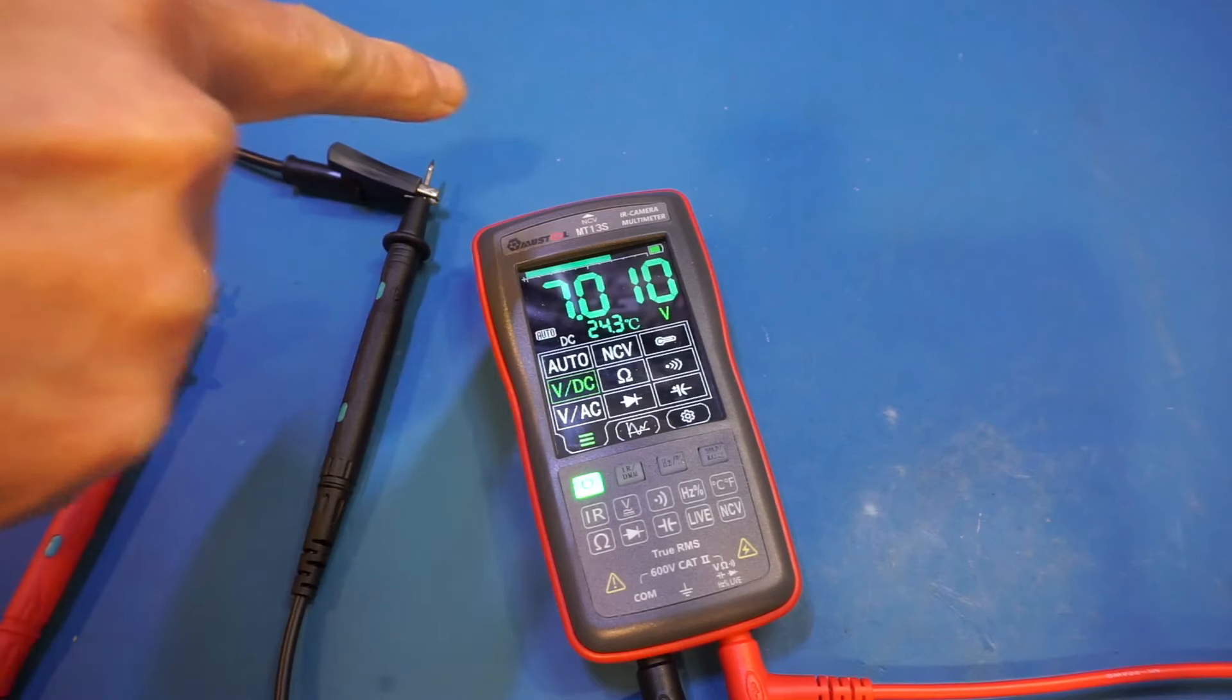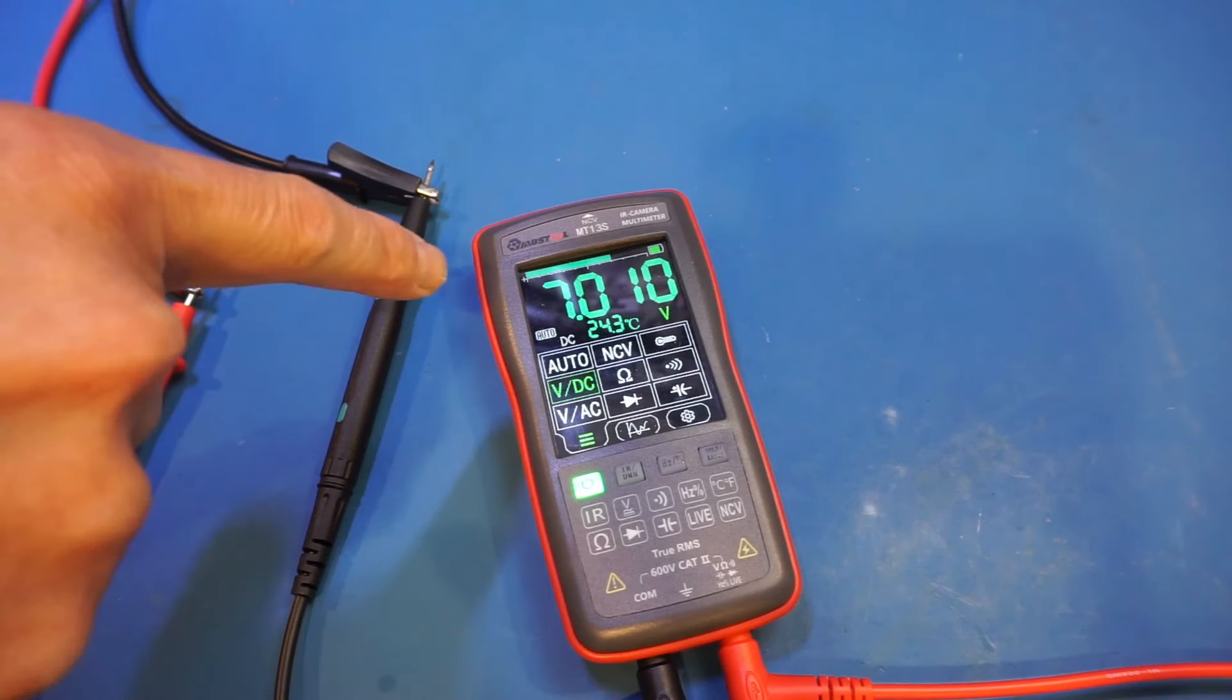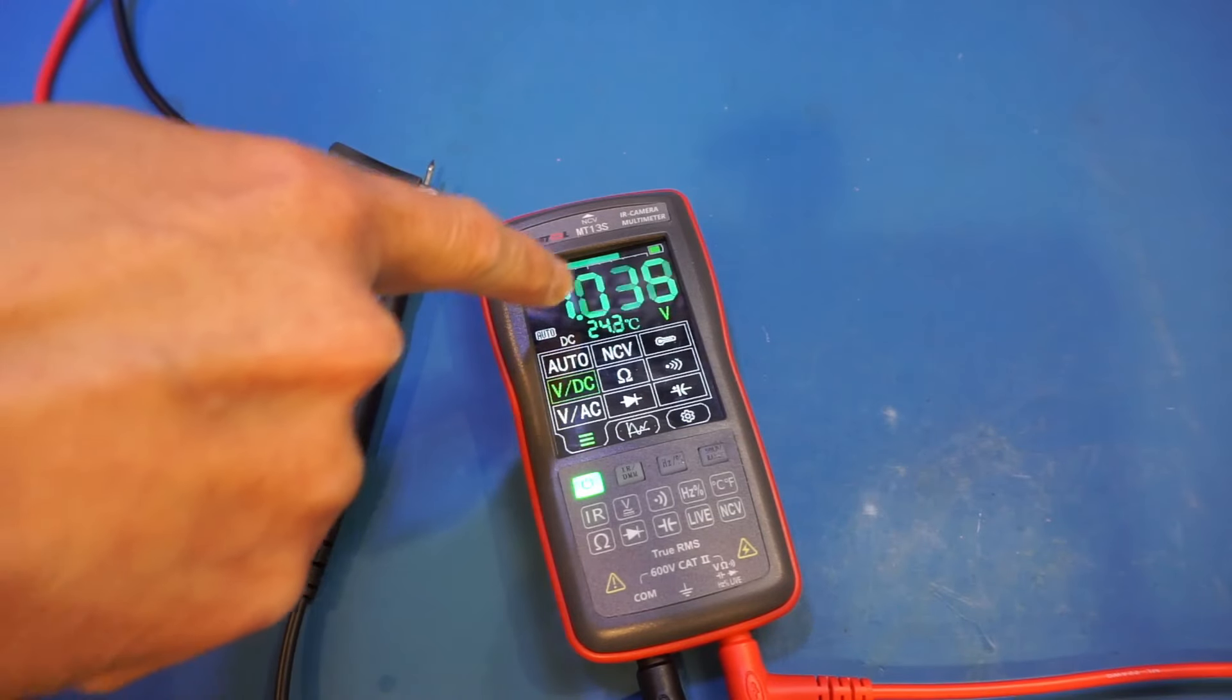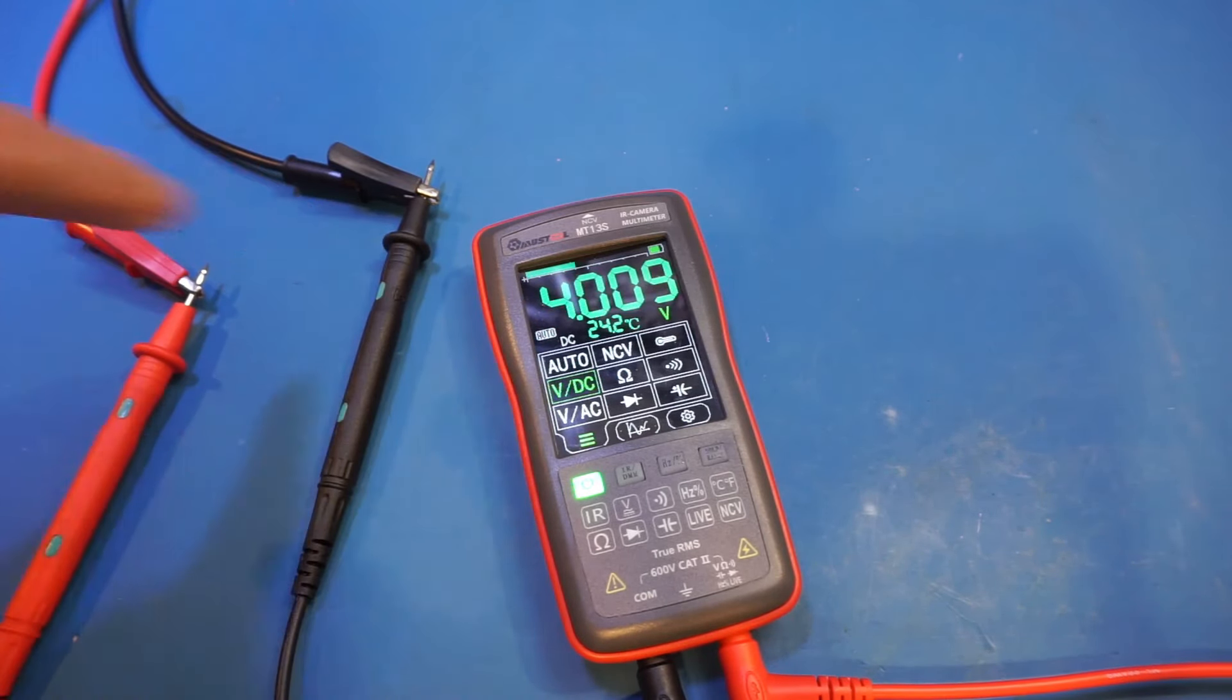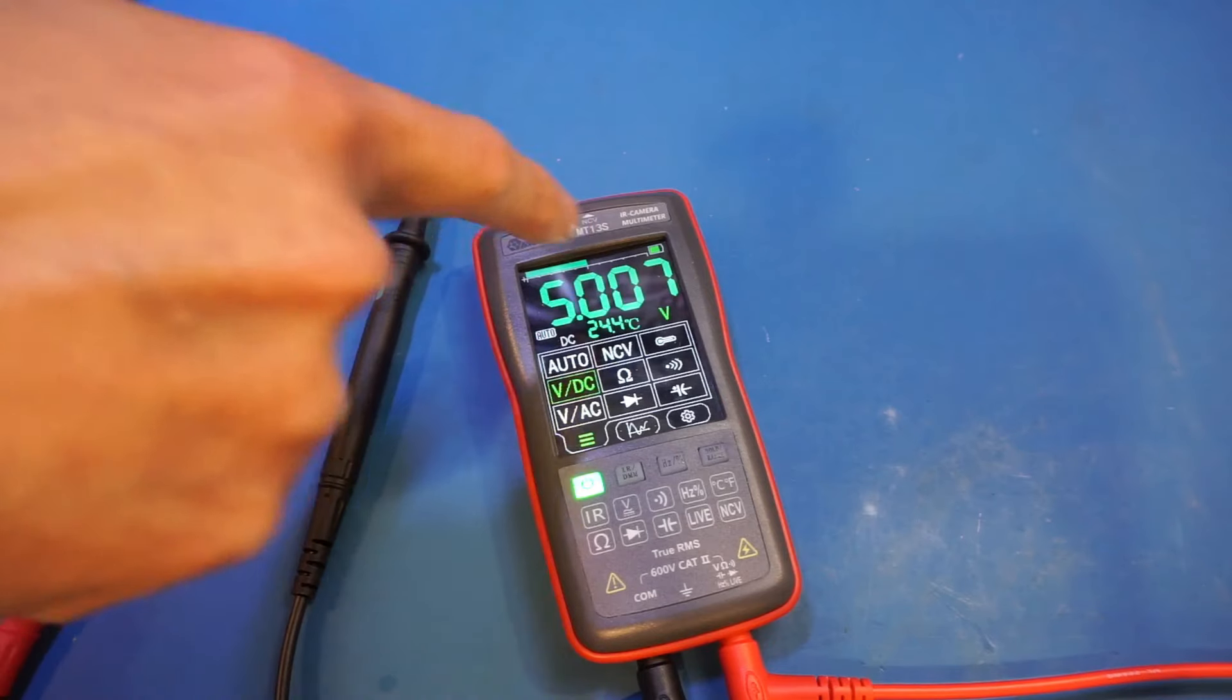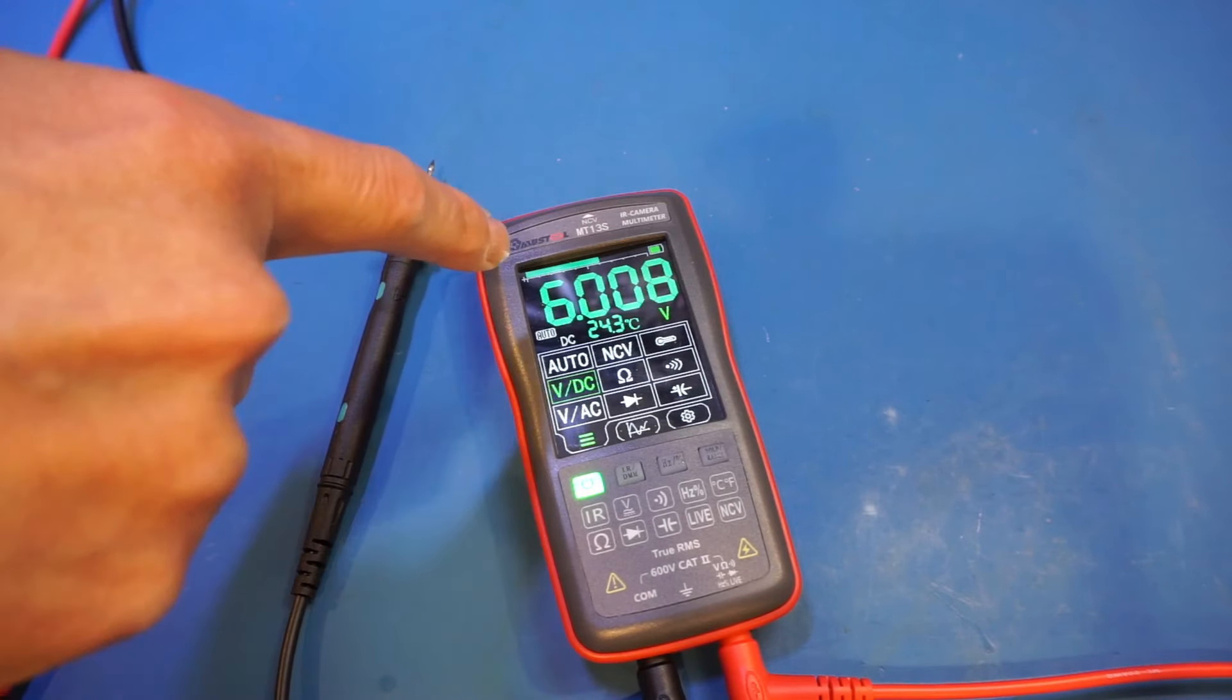As you can see, the display update rate is actually quite fast, which is definitely not bad. Now, the bar graph is a little bit distracting, in my opinion, as it pretty much has the same update rate as the actual display. You can see there's a huge delay here, and definitely it's not that fast. So in my opinion, it actually doesn't serve the purpose, as you won't be able to tell the fast-changing voltage measurement, even with the bar graph here.